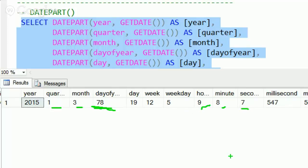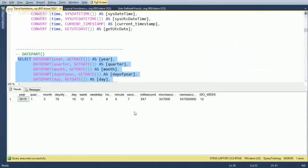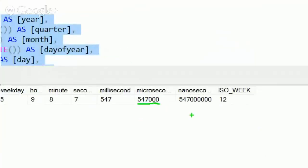We've got the hour, minute, and second of our time here. And then there's a couple other ones here, the microsecond and the nanosecond, and then the ISO week.